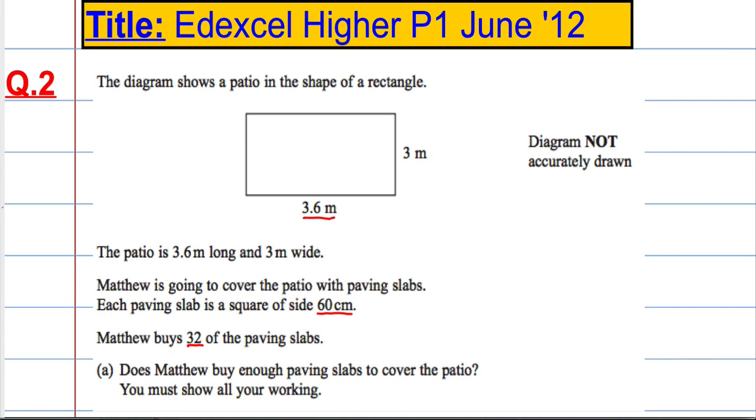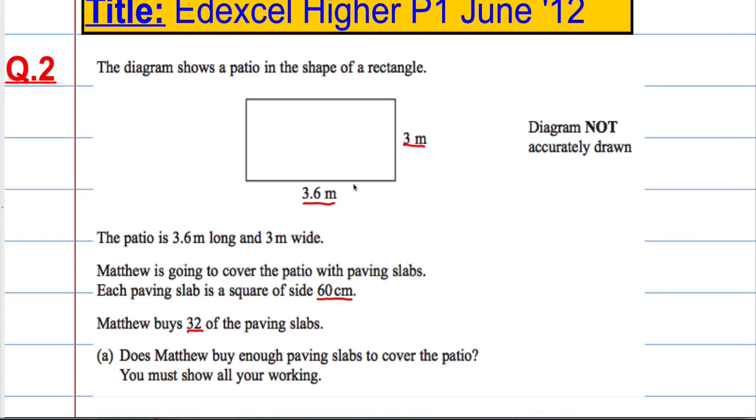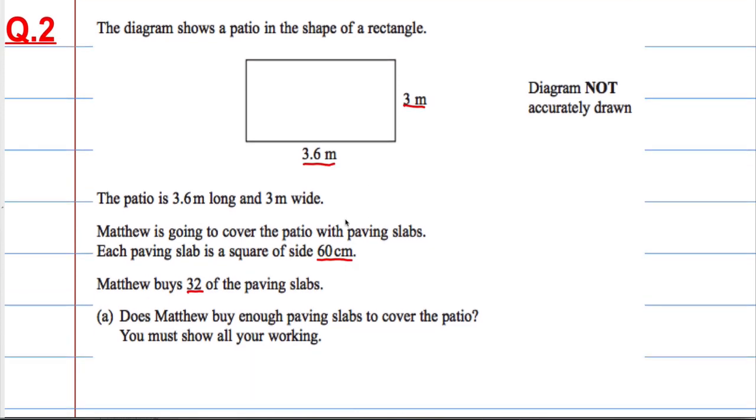The first thing I can see here is we're dealing with units. The patio is given in meters and the slabs are in centimeters. We're going to make the units the same so we don't come up against any calculation problems later on. 3.6 meters is 360 centimeters and 3 meters is 300 centimeters. We're going to do the whole problem using centimeters.